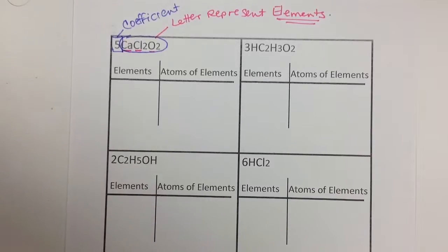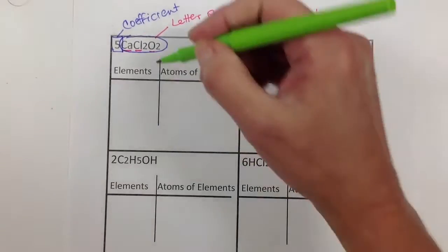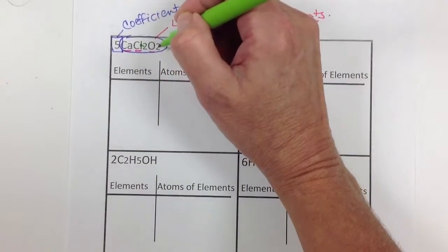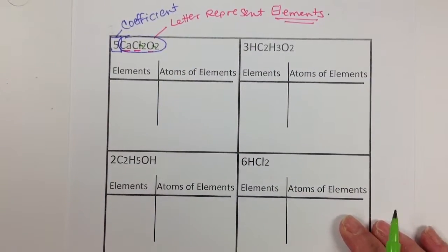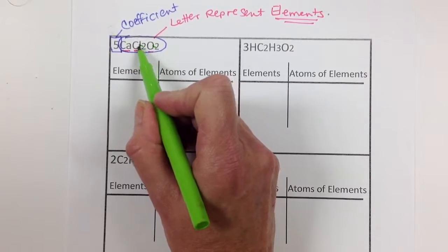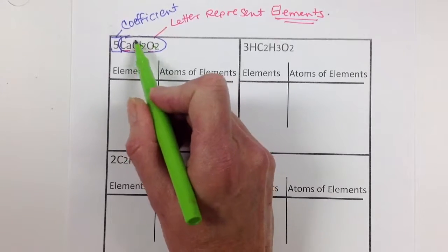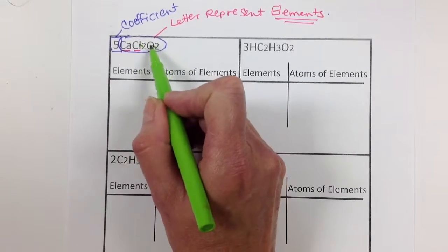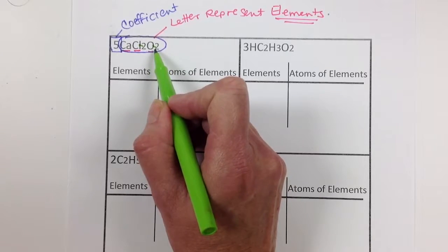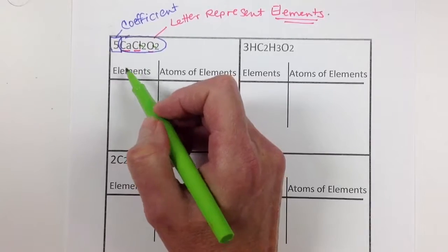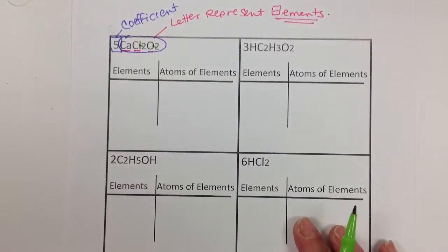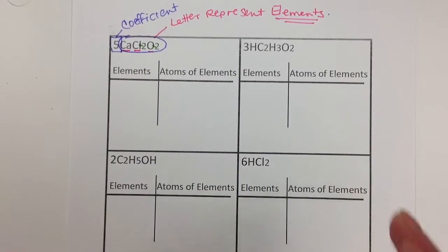A subscript, if you remember, the subscript was actually the little number that goes with the element in front of it. So this subscript two here tells me only about how many chlorine atoms I have. And this one tells me only how many oxygen atoms I have. So here we go. Let's see if we can figure out how many of each of these elements we have, how many atoms of each.